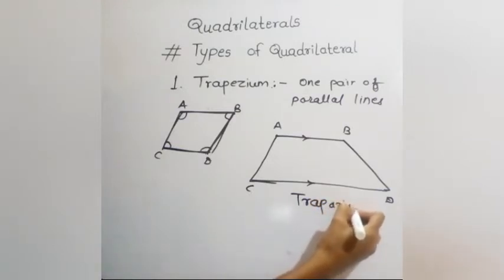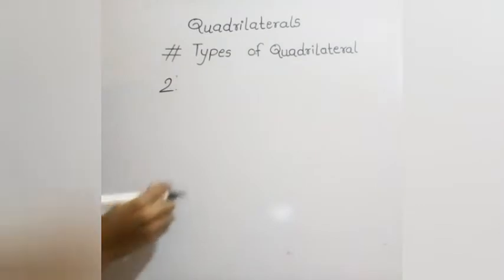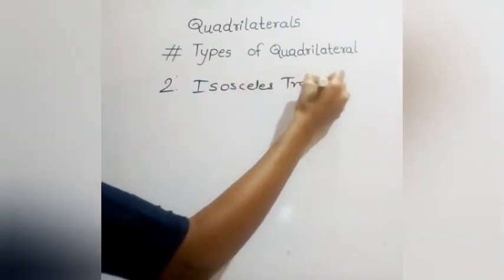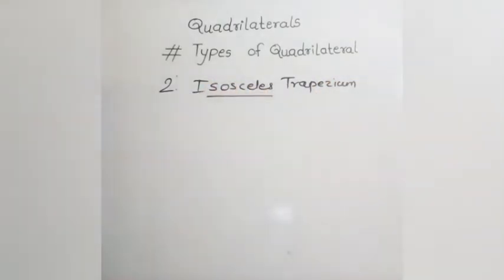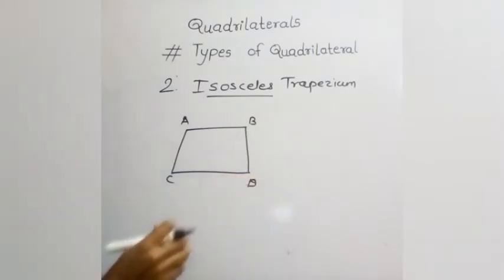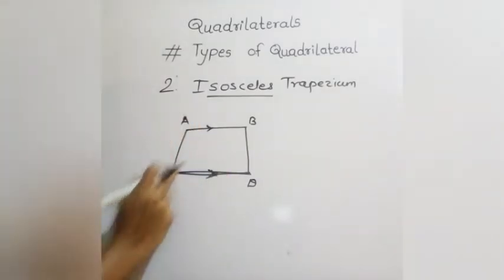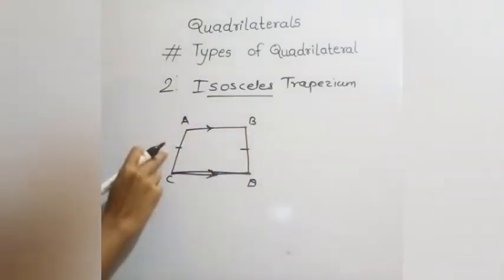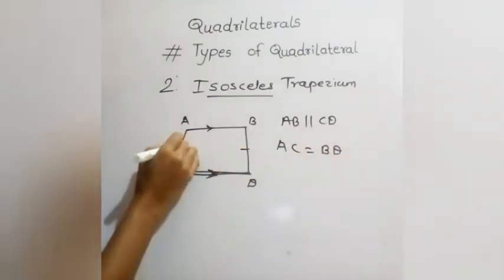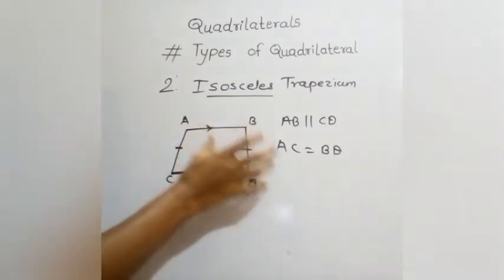The second type of quadrilateral is an isosceles trapezium. Isosceles means two sides are equal. In trapezium ABCD, AB is parallel to CD, and if the remaining sides AC and BD are equal to each other, then we call this an isosceles trapezium.